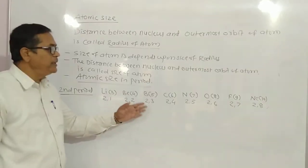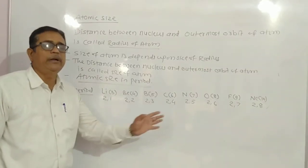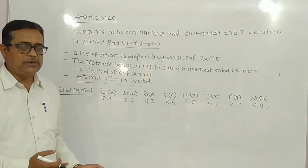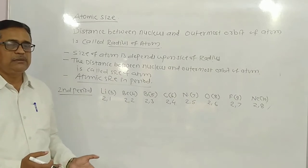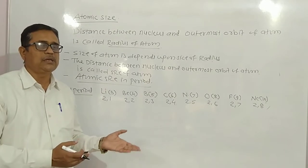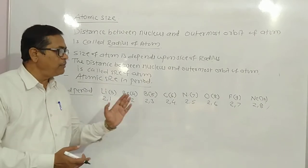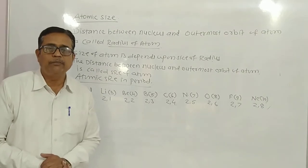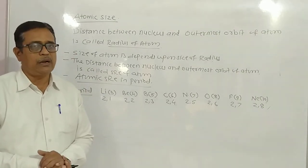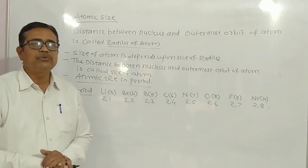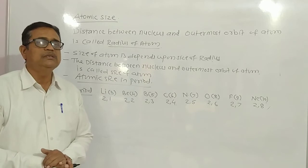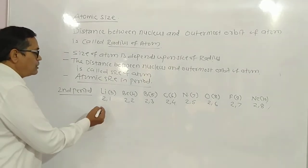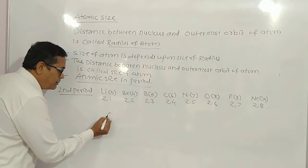The number of electrons increases from left to right. If the number of negative charges increases, the number of positive charges also increases from left to right, because the number of protons and electrons are equal in an atom — that is why an atom is electrically neutral.